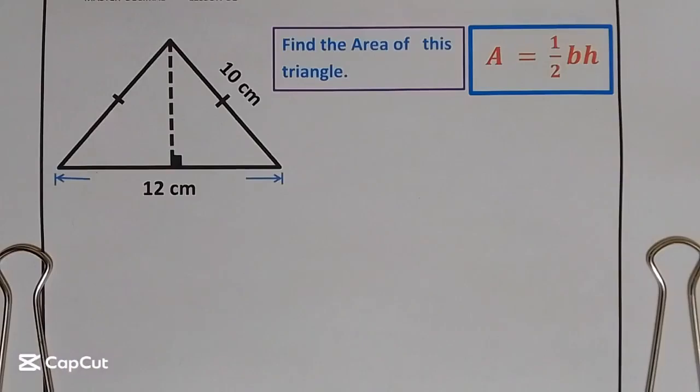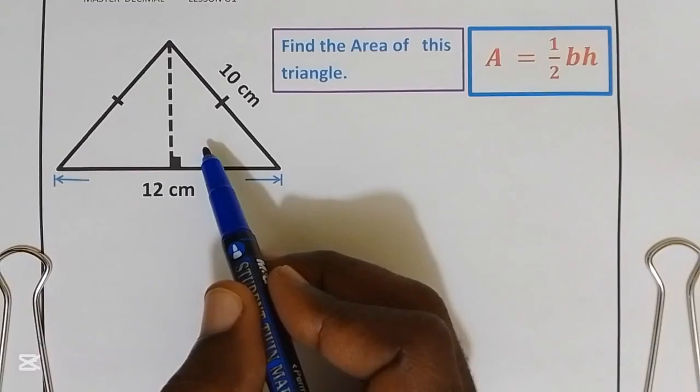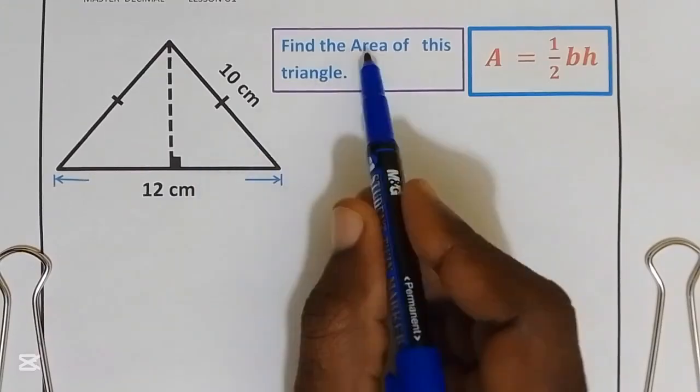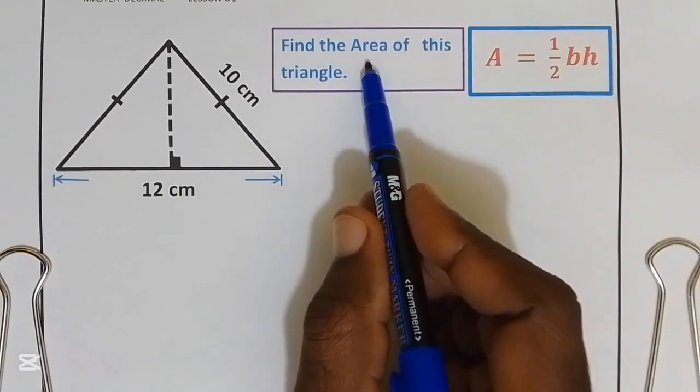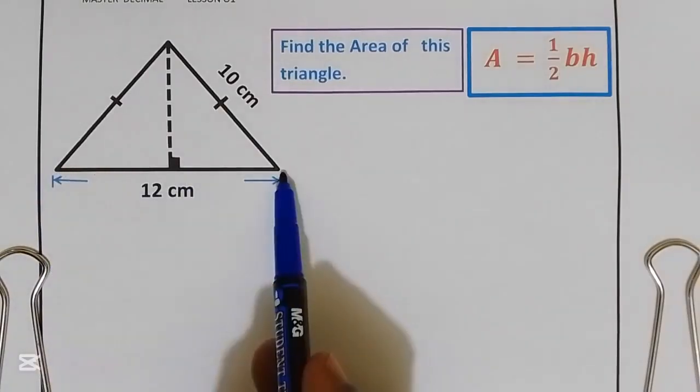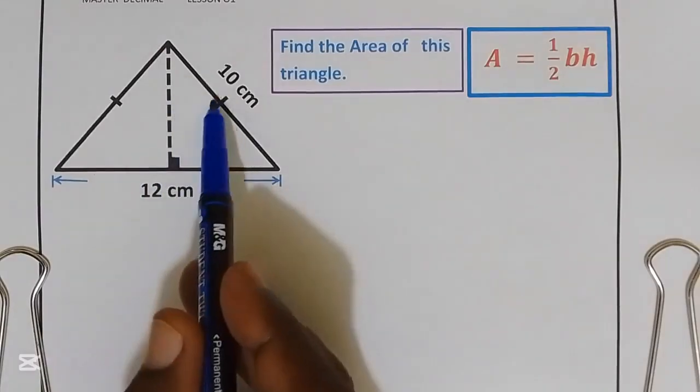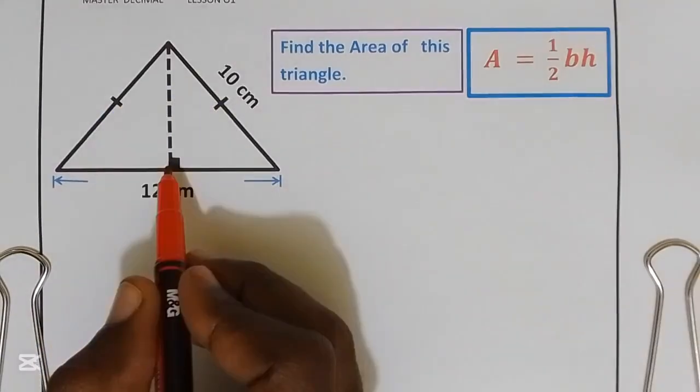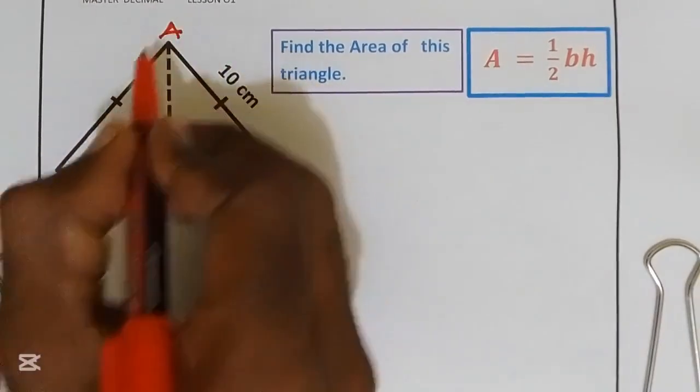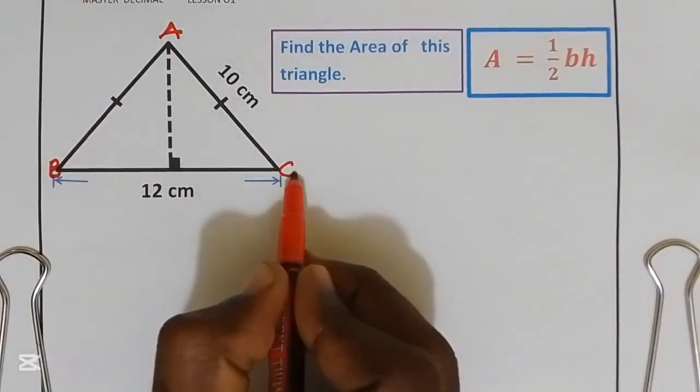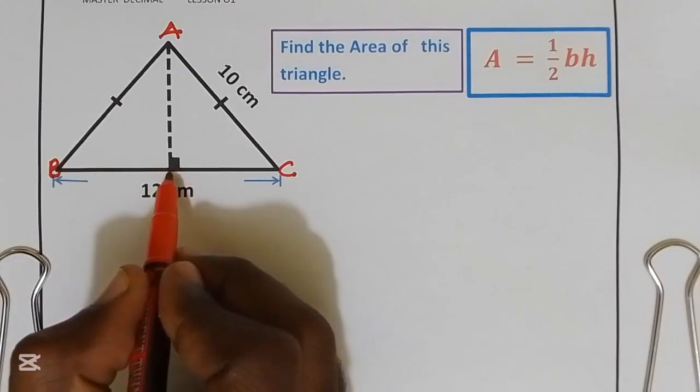Hi everybody, welcome back to my YouTube channel. We have a triangle and we need to find the area of it. They have given us a base of 12, but we don't have the height. This is an isosceles triangle. Let us name our triangle as triangle ABC, and let's put this as point B.